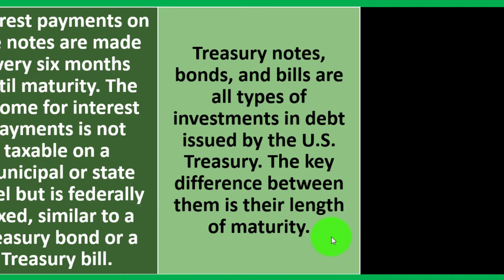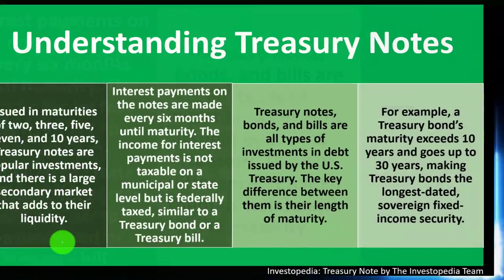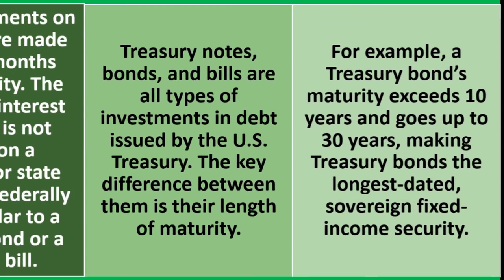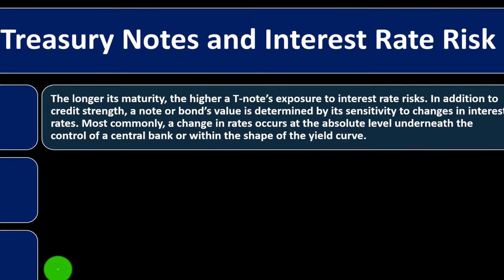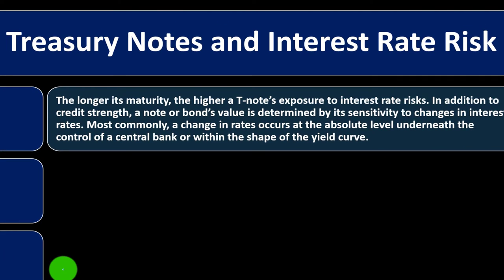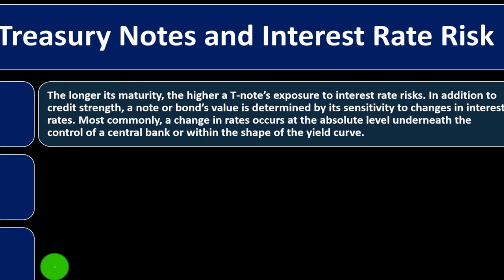The key difference between Treasury notes, bonds, and bills is their length of maturity. They are quite similar, but have different maturities. For example, a Treasury bond's maturity exceeds 10 years and goes up to 30 years, making Treasury bonds the longest dated sovereign fixed income security.